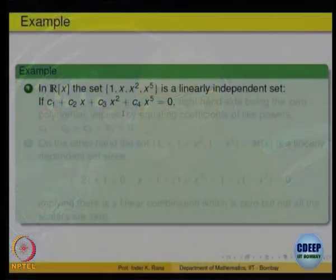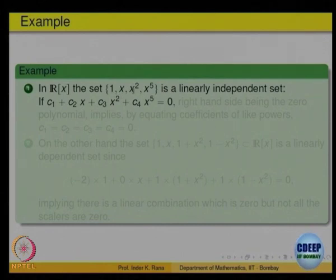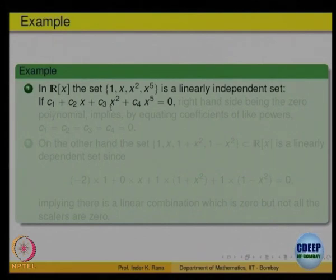So let us check it again. If this is equal to 0: c1 times 1 plus c2 times x plus c3 times x squared plus c4 times x to the 5 is equal to 0. Same proof — if this equals 0, that means these are the 0 polynomial on the right-hand side. So like powers' coefficients must be equal, and that means c1 must be 0, c2 must be 0, c3 must be 0, and c4 must be 0 — same reasoning.